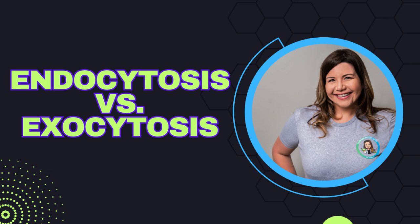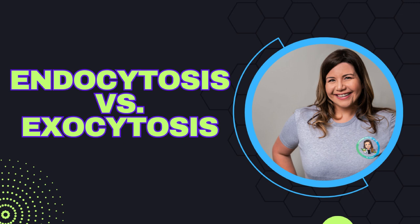they need to use specialized processes called exocytosis and endocytosis. These are forms of bulk transport that we are going to delve into during this video. Let's talk about exocytosis first. 'Exo' means out, so exocytosis is all about moving substances out of the cell — this is how the cell can secrete certain molecules outside of the cell that it has made inside.